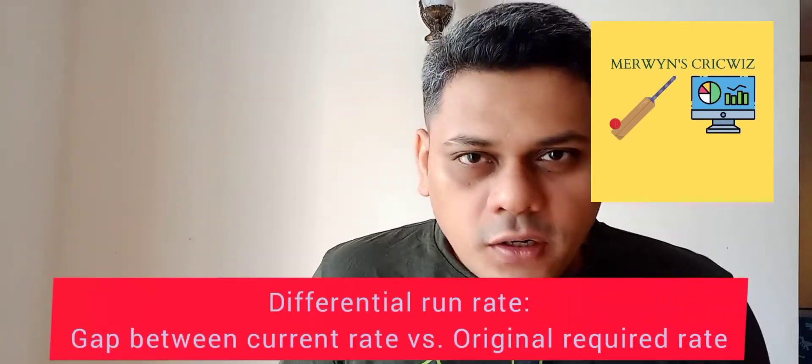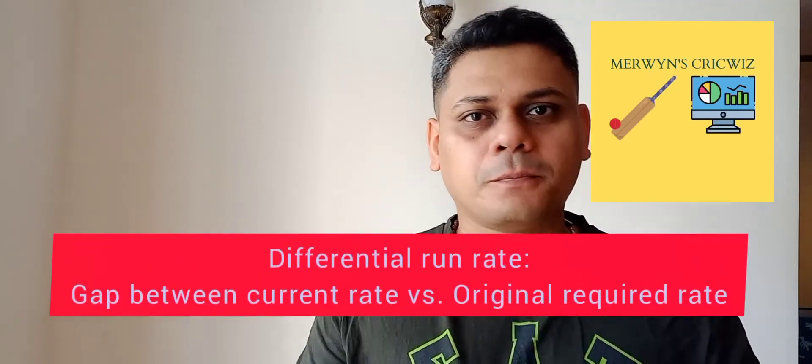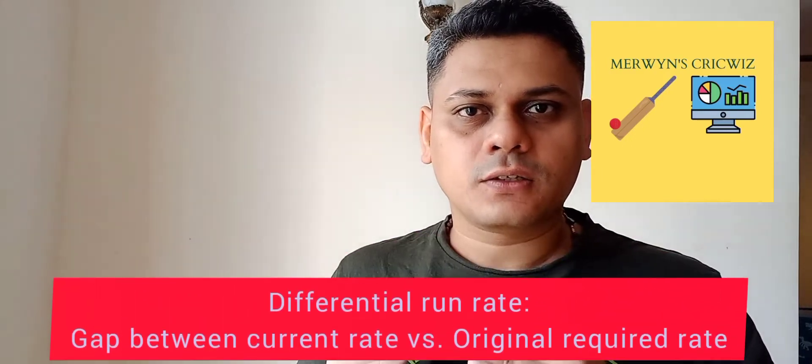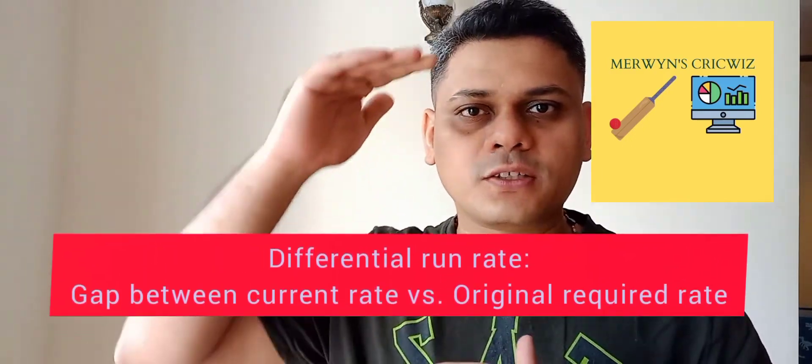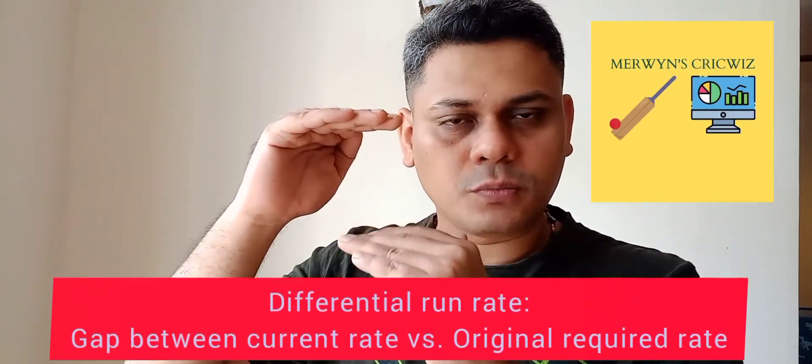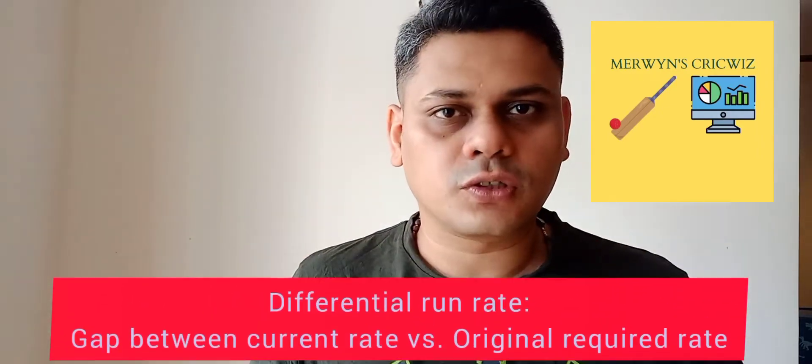Let's understand a concept known as differential run rate. Now what is differential run rate? Differential run rate simply means what is my current scoring rate and what is my original required run rate when I am chasing down a score. The difference between these two is purely differential run rate.